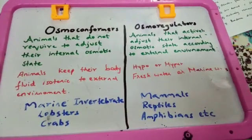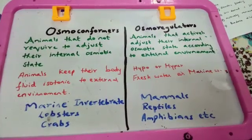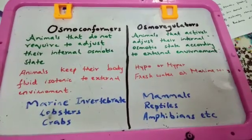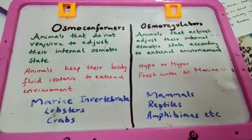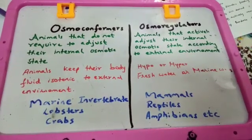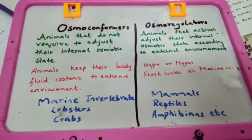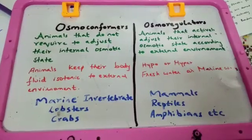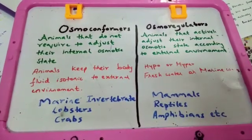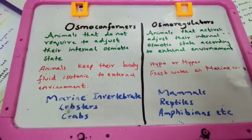So what is an osmoregulator? Osmoregulators are those animals in which their body environment is different from their external environment. They need energy — they utilize energy for that — because their body fluids are not exactly like their environment.